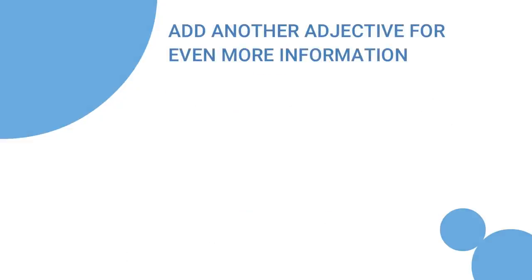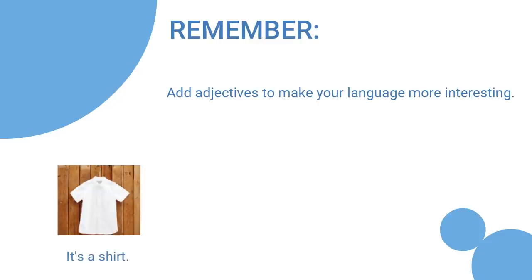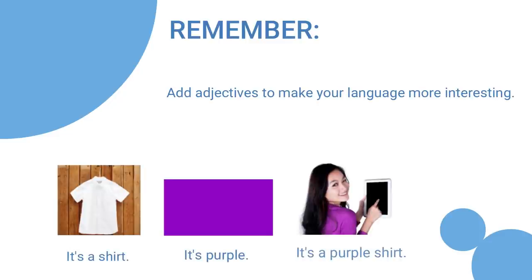Add another adjective for even more information. We can also add an additional adjective to describe the object even more. It's a short fat pencil. Remember, add adjectives to make your language more interesting. It's a shirt. It's purple. It's a purple shirt.